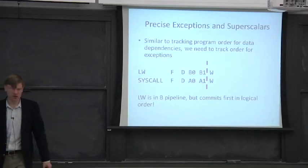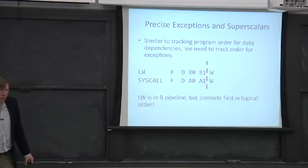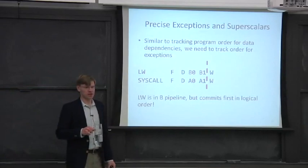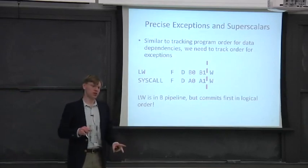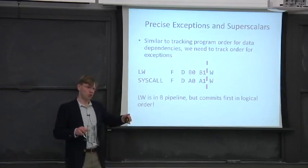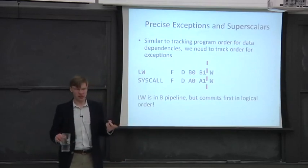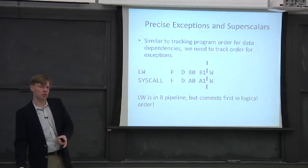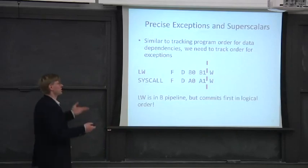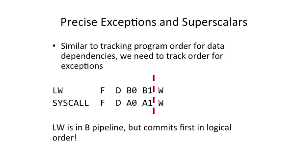An important question comes up with something like a superscalar when you're executing multiple instructions at the same time: what happens when you fetch two instructions and one of those instructions takes an interrupt or an exception as it's going down the pipeline? Let's take an example here. Let's say we have a load and then a system call instruction. Now both these instructions can effectively take interrupts or exceptions. The load can take something like a TLB miss or an alignment fault. The syscall instruction, by definition, is effectively making an interrupt occur.